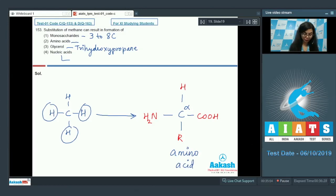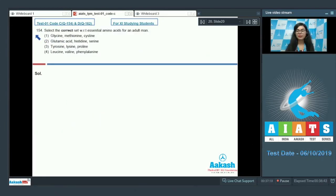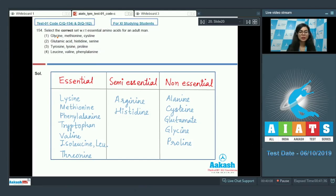Question 154: Select the correct set with respect to essential amino acids for an adult man. Various combinations of amino acids are given; we have to look for the set which only has essential amino acids listed. Amino acids which occur in proteins are of 20 types as per the genetic code. Humans are incapable of synthesizing about half of these 20 standard amino acids, and these are known as essential amino acids because they must be obtained from food.